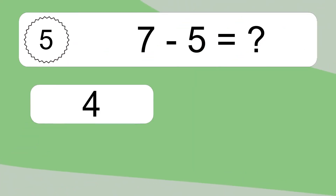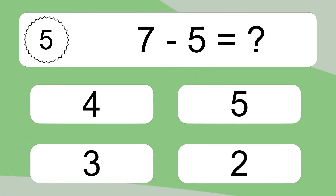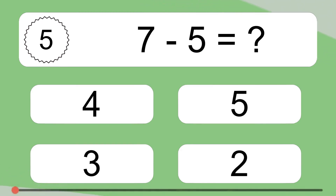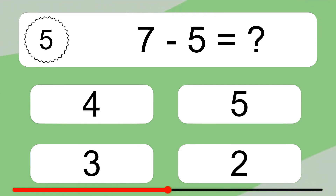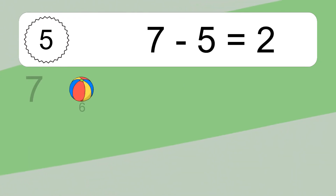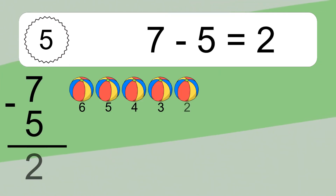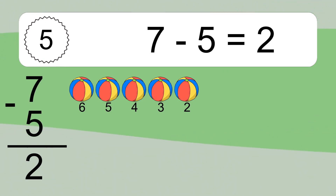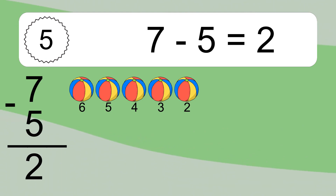7 minus 5 equals what? 7 minus 5 equals 2. Let's count it. 6, 5, 4, 3, 2.